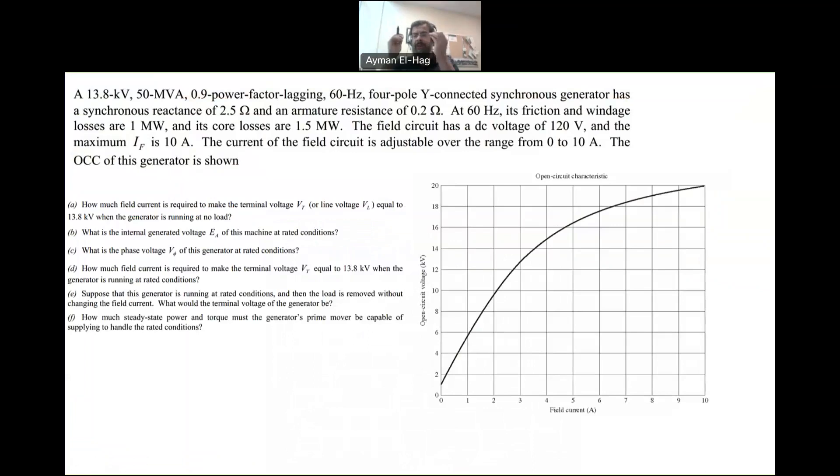Let's read the question and understand each term. We start with the rated voltage of the generator, 13.8 kilovolt. This is the output terminal voltage. 50 MVA is the rated output power. 0.9 power factor lagging is the power factor to be considered for this specific question.